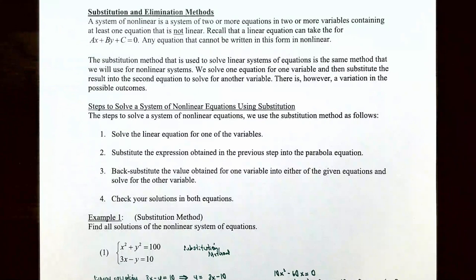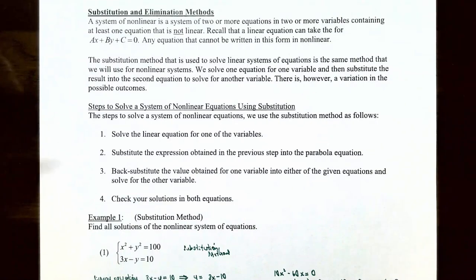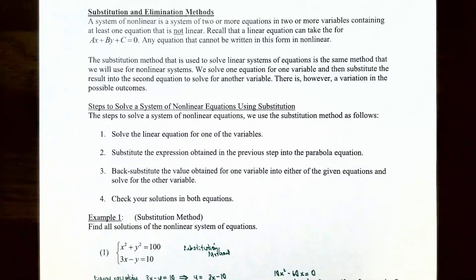We take one of the equations, solve for one of the variables, then substitute that result into the other equation and solve for the remaining variable. There is a variation in the possible outcomes when using substitution. The steps are: Step 1, solve the linear equation for one variable. Step 2, substitute into the non-linear equation. Step 3, back-substitute to find the remaining variable. Step 4, check your answers by substituting values back into each original equation.